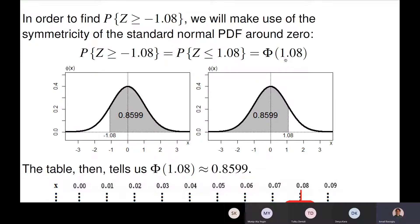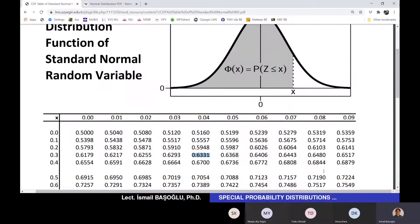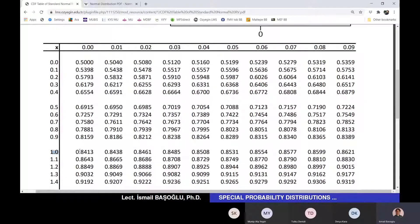The probability of Z being greater than or equal to a negative value equals the probability of the standard normal variable being less than or equal to the positive counterpart of that value. That is basically Φ(1.08). I draw the diagram, determine the area needed, and using symmetry that area equals the CDF at 1.08, which is 0.8599.